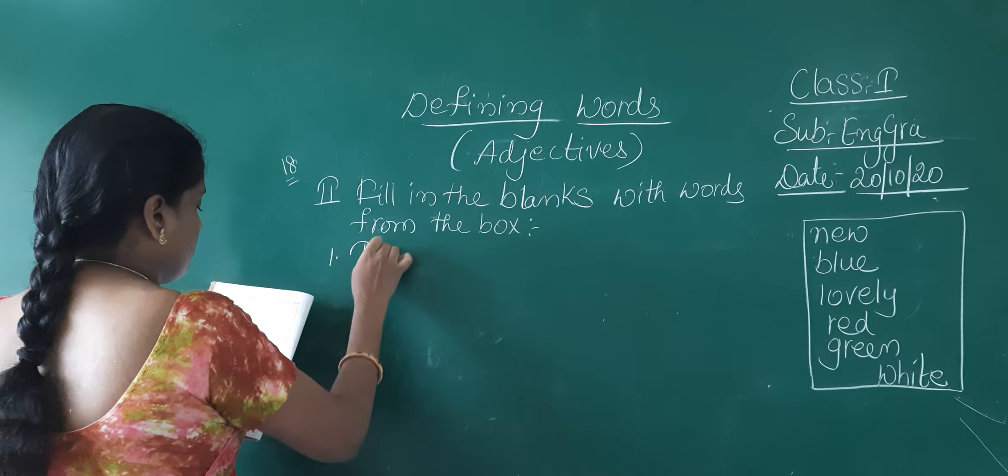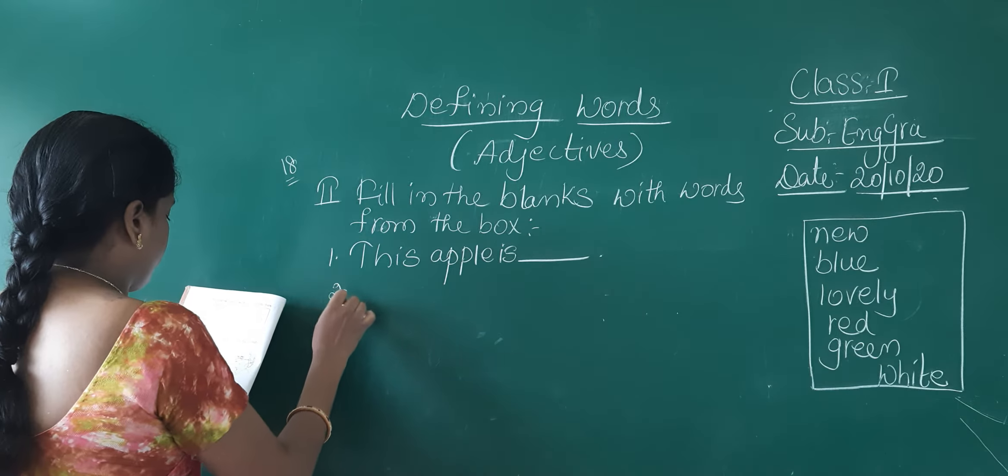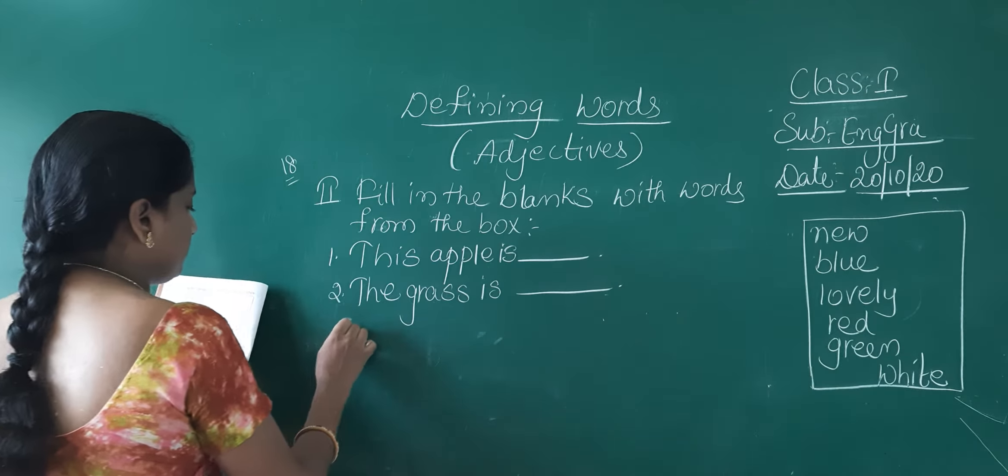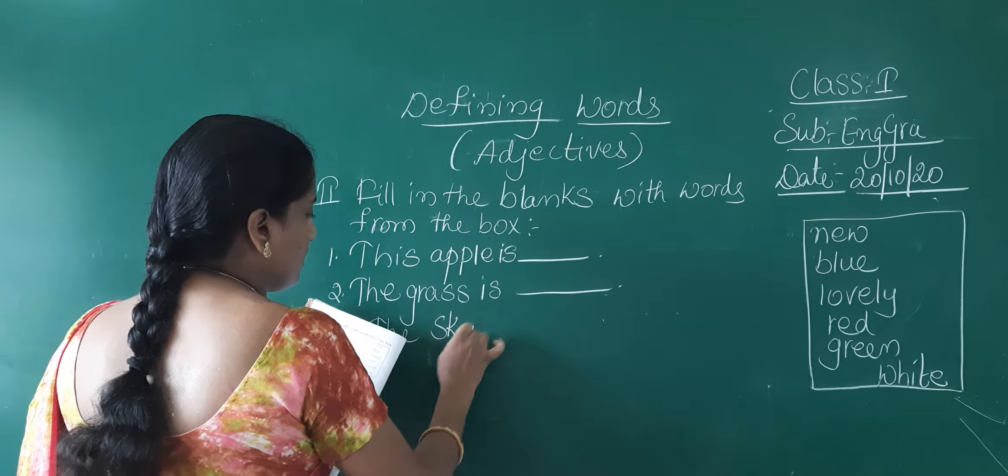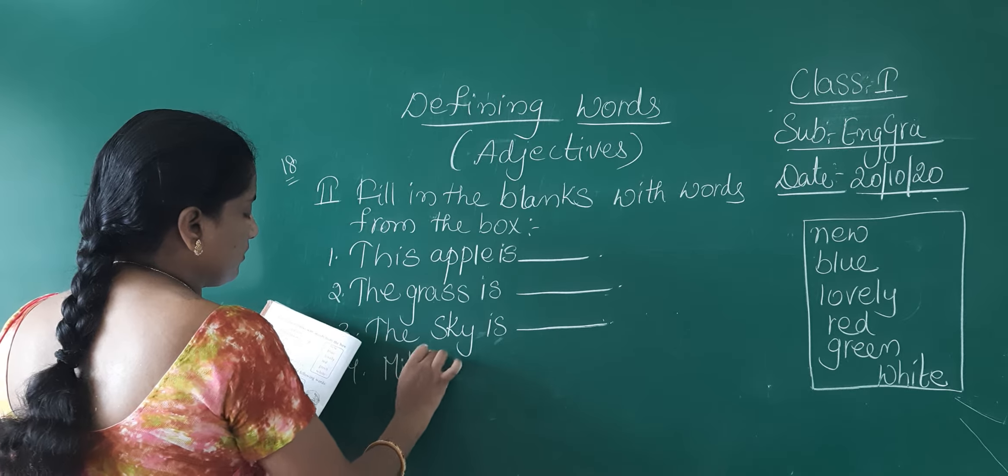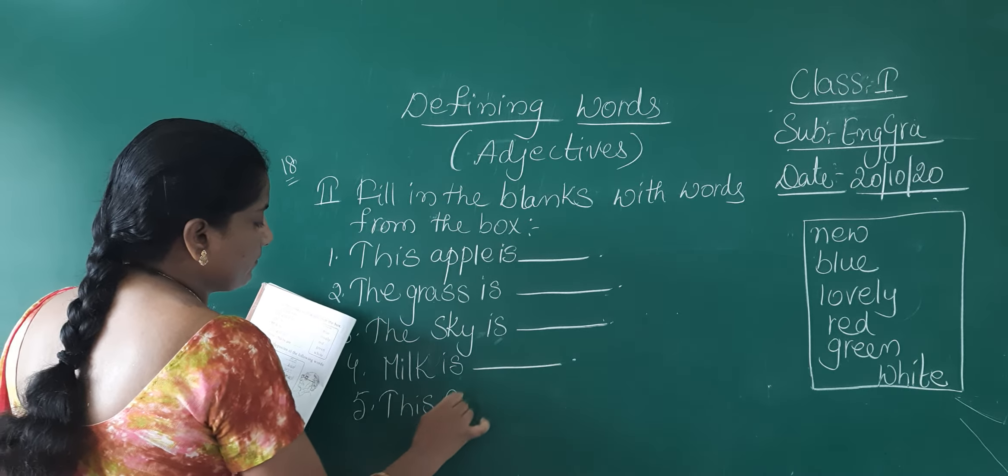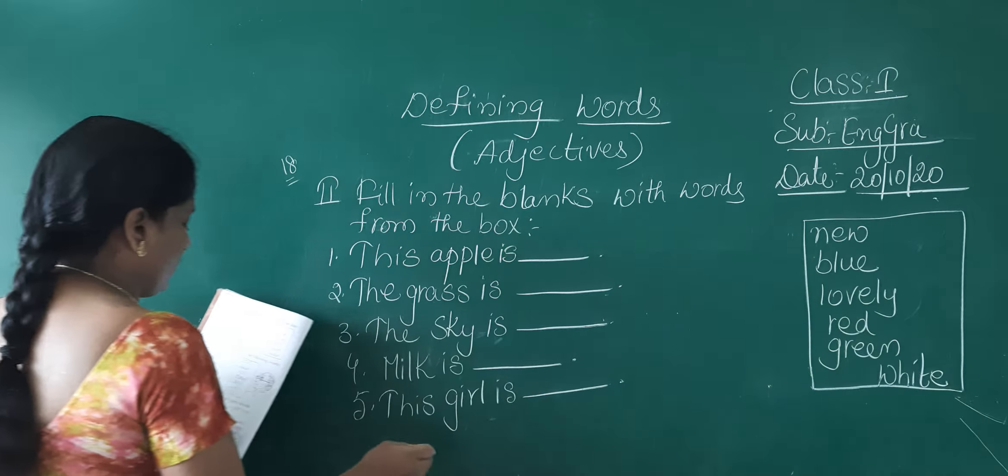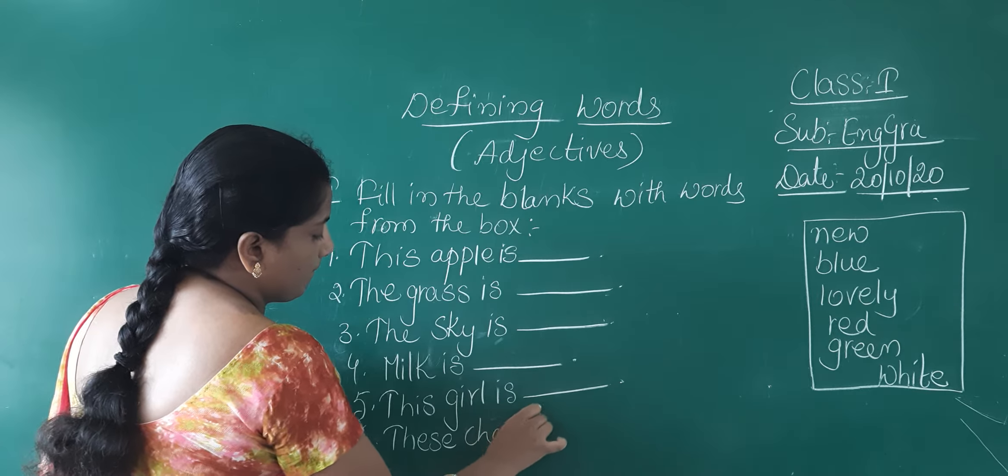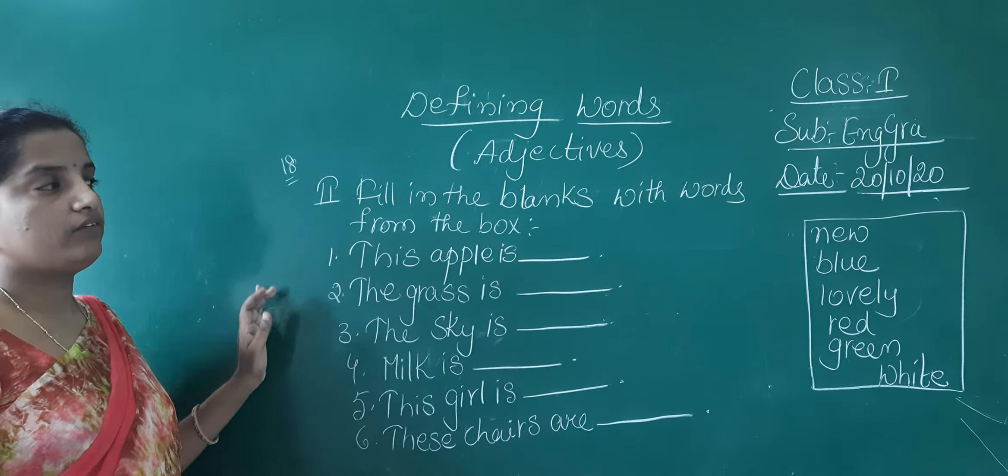Coming to the first here, blanks children. This apple is dash. Coming to the second one, the grass is dash. Coming to the third one, the sky is dash. Milk is, fourth one, milk is dash. Coming to the fifth one, this girl is dash. These chairs are dash.